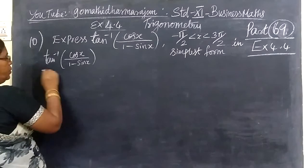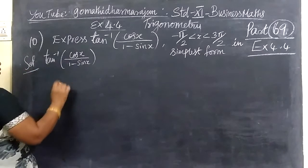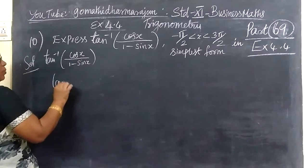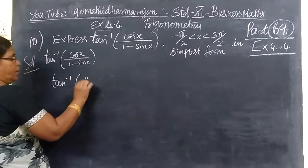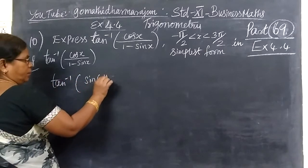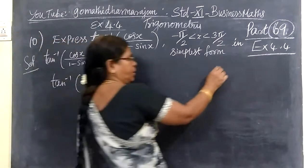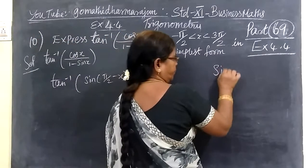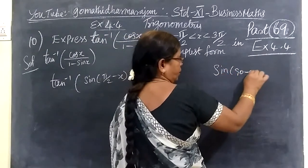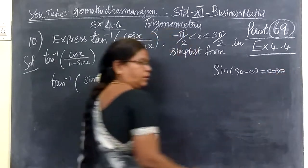Express this one. For this list, we take here. We cross it. We know that 90 minus here — sin of 90 minus theta equals cos theta.